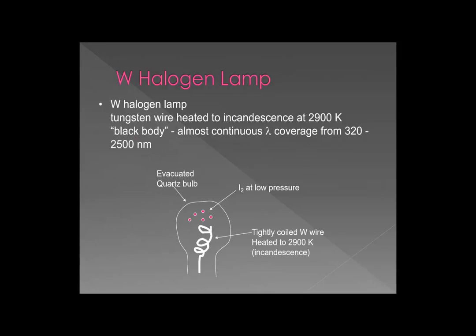Let's start with the tungsten halogen lamp. This should be fairly familiar — you've probably encountered a torchier-style lamp at home; those are basically tungsten halogen lamps. The lamp is a bulb — an envelope — made from an optically transparent material, not glass but quartz. Inside the lamp there is a very regularly and tightly coiled filament of high-quality tungsten wire. You evacuate the bulb, seal it, and backfill it with a small amount of iodine gas at relatively low pressure.